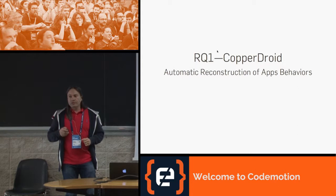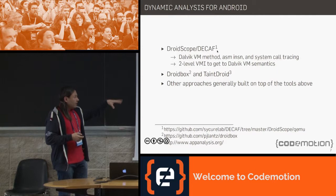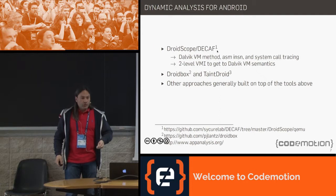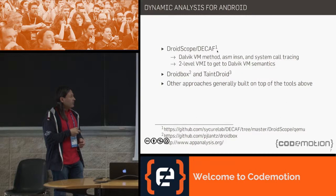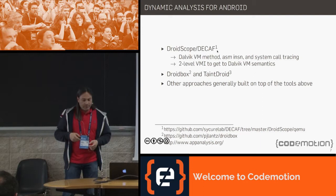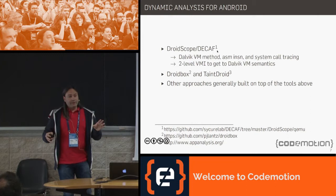The first question we try to answer with CopperDroid — a dynamic analysis system we've been developing at Royal Holloway for the past two years. There has been some prior work in dynamic analysis, with the most predominant system probably being DroidScope or Decaf. The problem with those approaches is that they build behavioral abstractions by looking at different levels of abstraction separately.